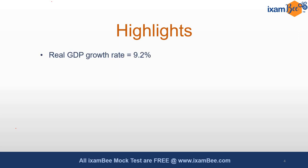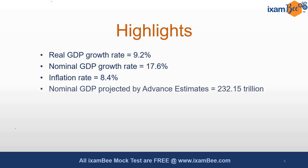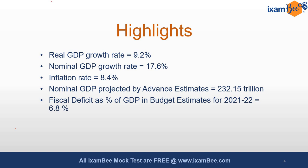The major highlights of this release are that the real GDP growth rate is estimated at 9.2%, whereas the nominal GDP growth rate is estimated at 17.6%, and so the difference between the two — which is the inflation rate — is 8.4%. Nominal GDP projected by the advanced estimate is 232.15 trillion, and the fiscal deficit as a percentage of GDP in budget estimates is 6.8%.